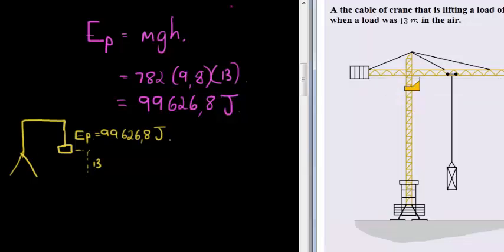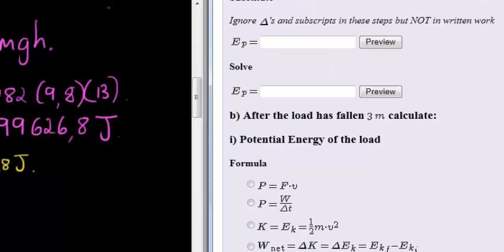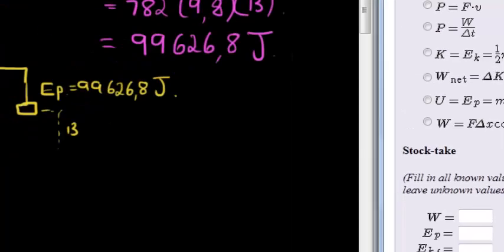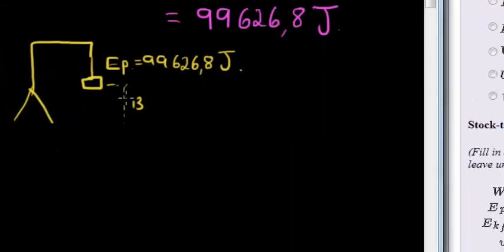Next question. After the load has fallen 3 meters, calculate the potential energy. So after it's fallen 3 meters, it is now at 10 meters up in the air, because it's lost 3 meters.